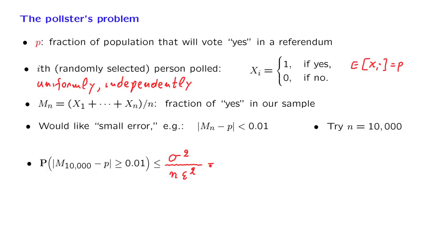What is this quantity? Sigma squared is the variance of the random variable that we are sampling. And since this is Bernoulli, this variance is p times 1 minus p. And then we divide by n, which in our case is 10 to the 4th, times epsilon squared. Epsilon is 10 to the minus 2, so here we have 10 to the minus 4.